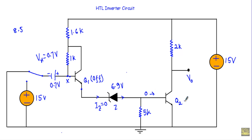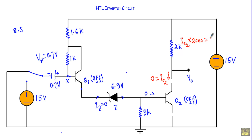Consequently, the Zener current IZ will be equal to 0. Because of that, there will be no base current at the base terminal of transistor Q2, so it will also be in the off state. When Q2 is off, its collector and emitter terminals act like an open switch, so the collector current IC2 will be equal to 0. Therefore the voltage drop across the 2 kΩ resistor will be IC2 × 2000 = 0. That means 15 volt will appear at the output terminal. For logical 0 input, our output will be at logic 1, which is the characteristic of an inverter circuit.